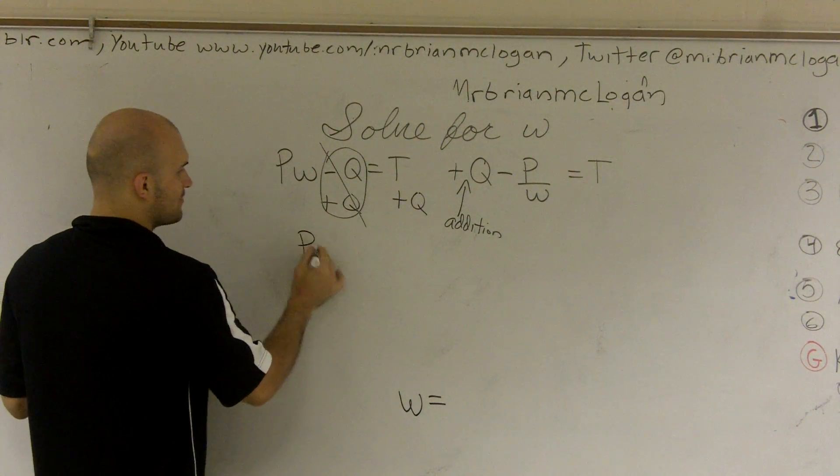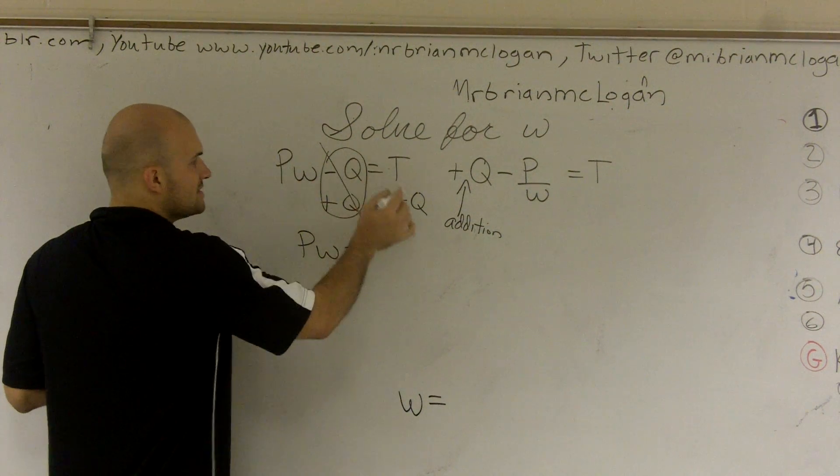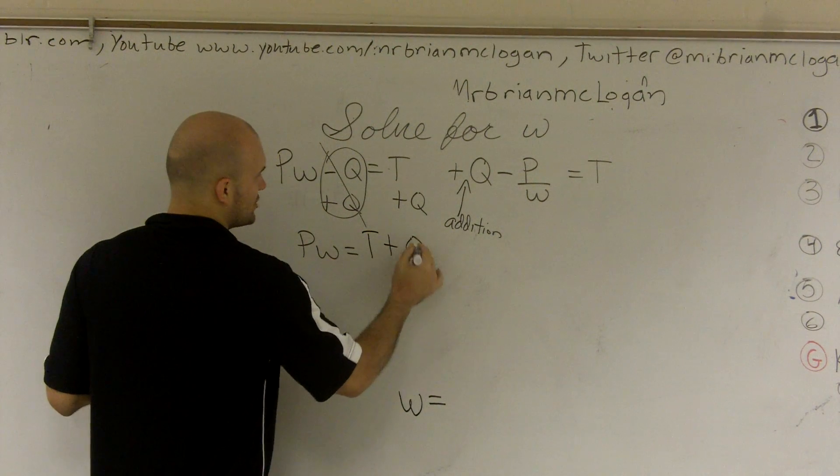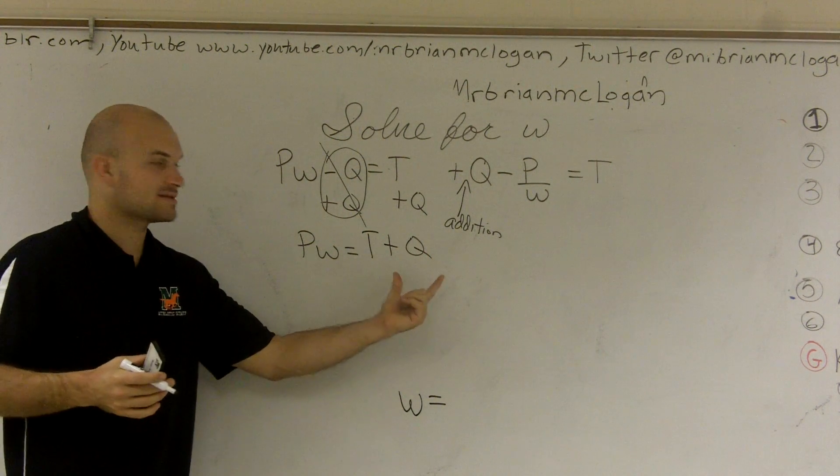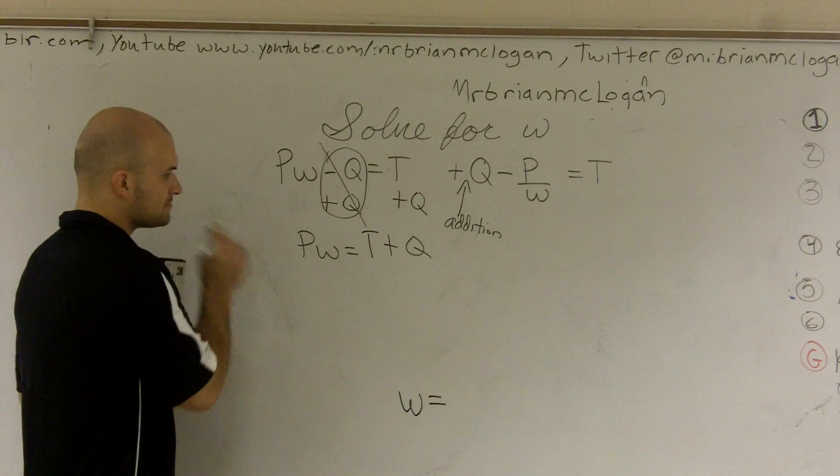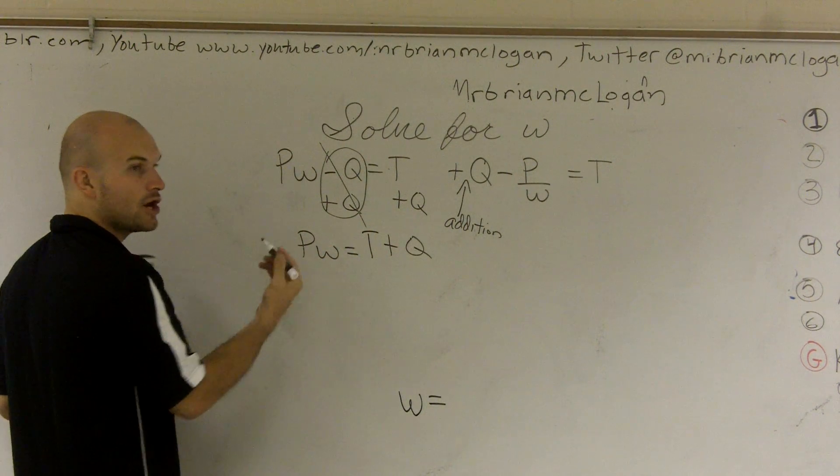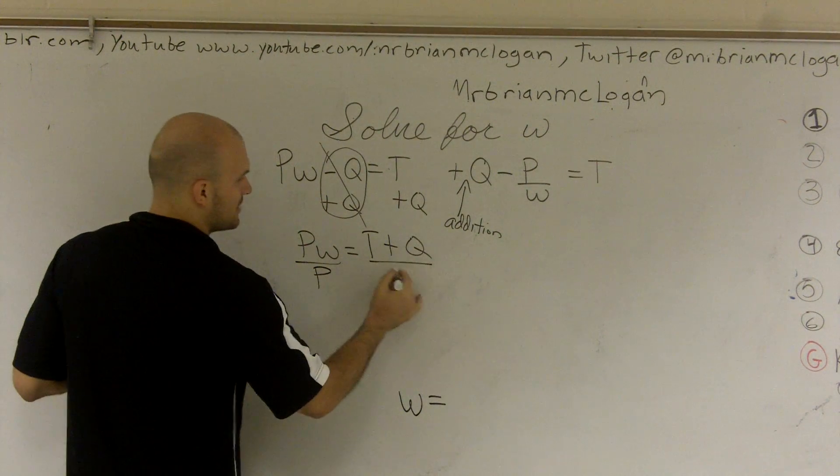And that just leaves us with pw equals t plus q is not w, or z, or x. It's just t plus q. We don't know what they represent. So just leave them there. Now we see we have multiplication by our p. So to undo multiplication, we need to divide by p.